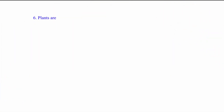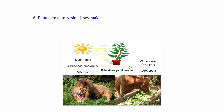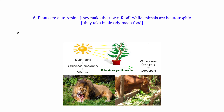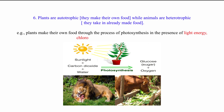Six: plants are autotrophic — they make their own food — while animals are heterotrophic — they take in already made food. For example, plants make their own food through the process of photosynthesis in the presence of light energy, chlorophyll, water, and carbon dioxide.